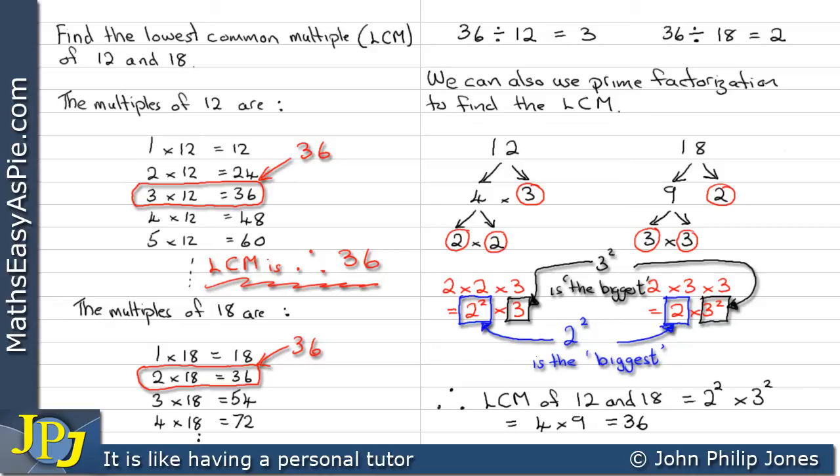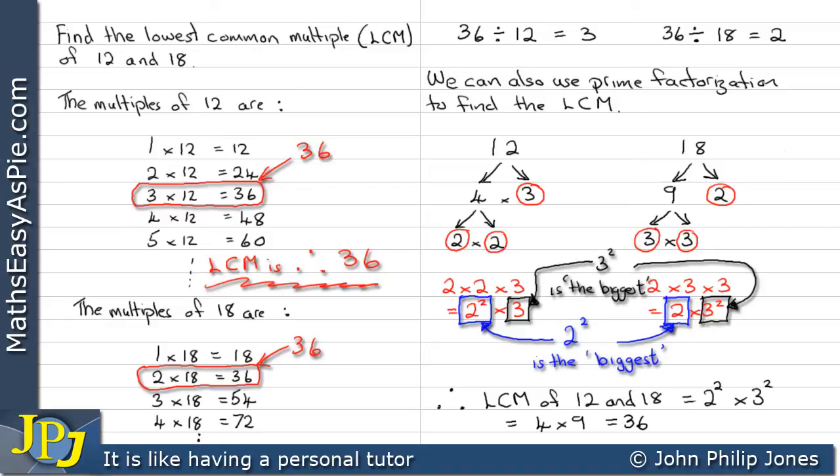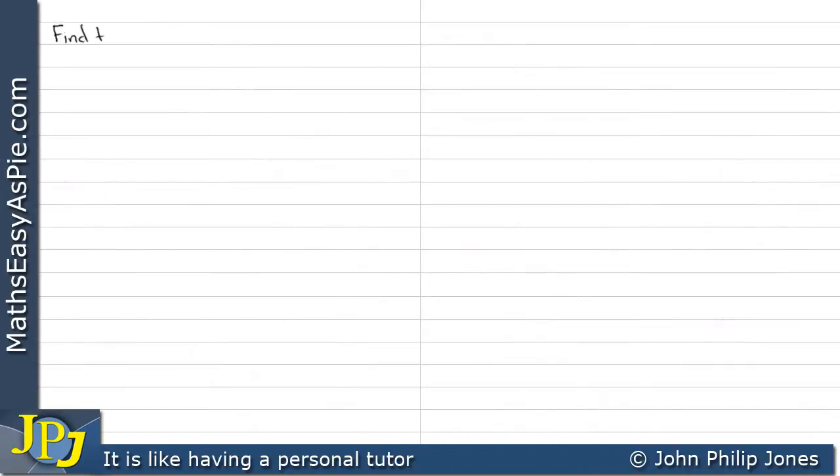Consequently, we can see we found that the lowest common denominator is 36 using this technique. We'll now look at another example.